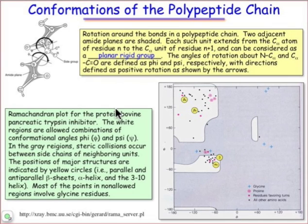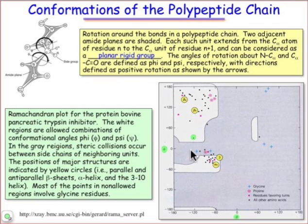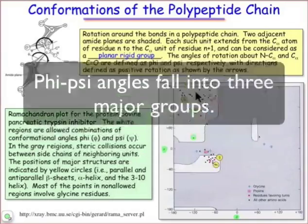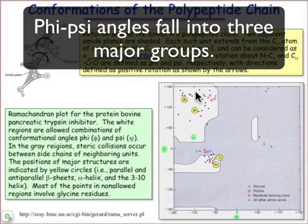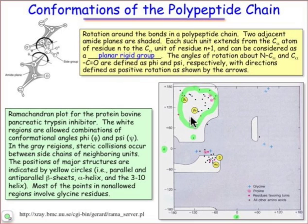Each point on a Ramachandran plot represents an alpha-carbon and the two torsion angles, φ and ψ, on either side of that group. What you can see is that there are very popular regions in this φ-ψ space, and the alpha-carbons tend to congregate into relatively small numbers of clusters. In fact, people have identified regions of what are known as allowed conformations.